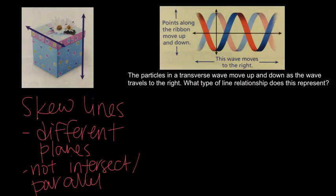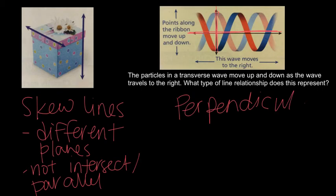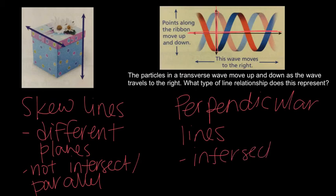So lastly, we have one quick question here. The particles in a transverse wave move up and down as the waves travel to the right. What type of line relationship does this represent? So we're saying they move up and down and it travels right. So this would be an example of perpendicular lines. Perpendicular lines because intersect at 90 degree angles.